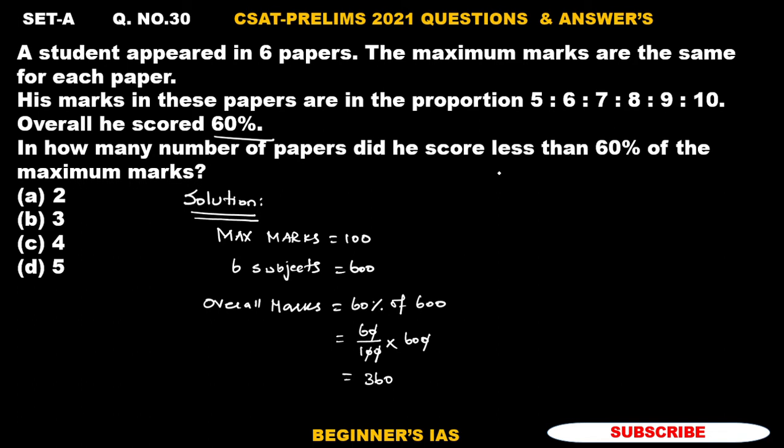Just check with the question according to the data given. Therefore we can identify the marks in the proportion, which means 5x. It is in the ratio, therefore 6x and then 7x, this is 8x, this is 9x, this is 10x. Total marks, sum of the marks is given here as 360.